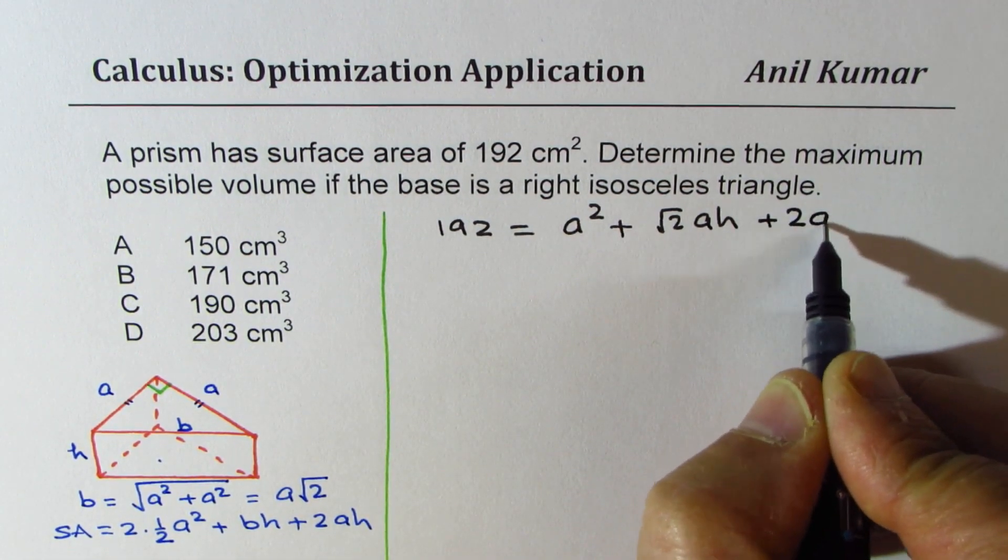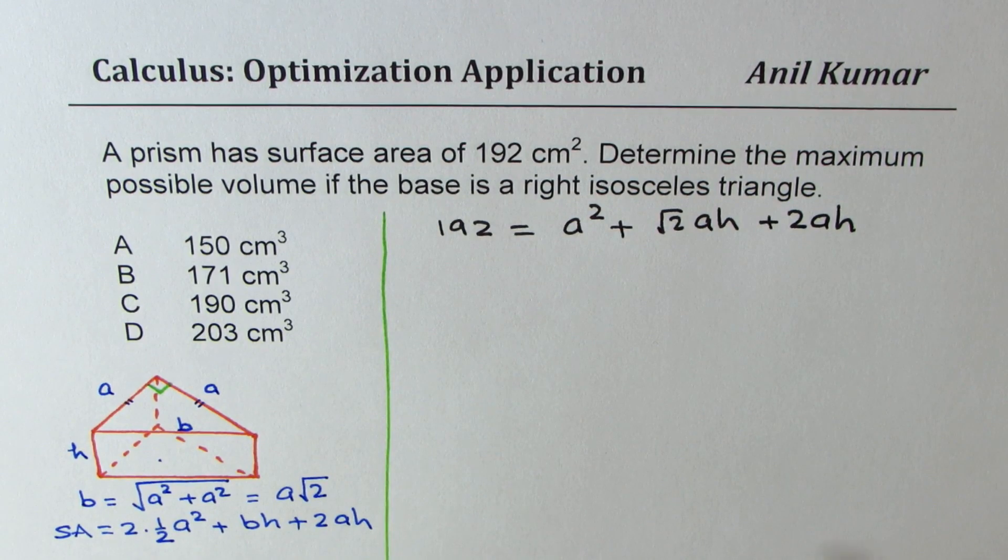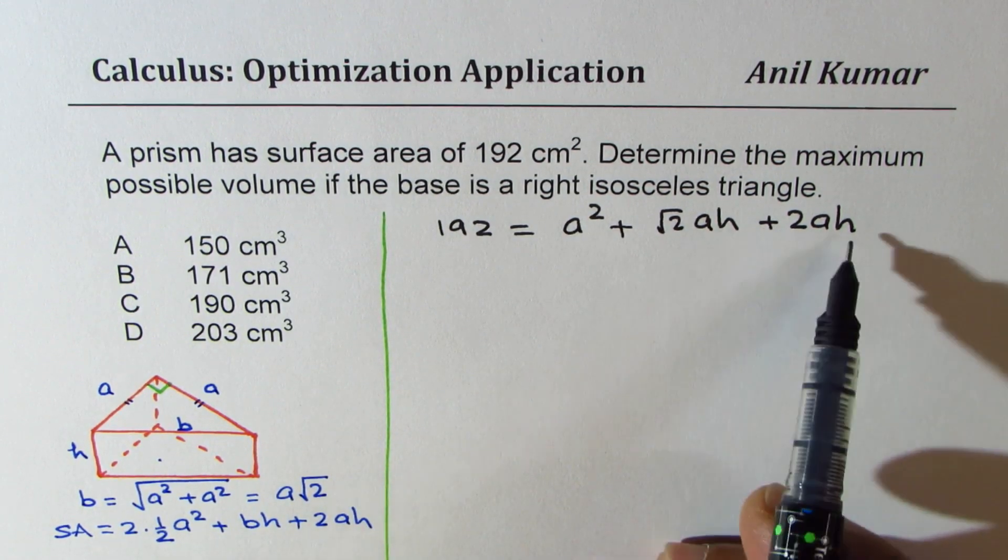2 times ah, so plus 2 times ah. So we have already taken away b by substituting a square root 2. Now we can isolate h.